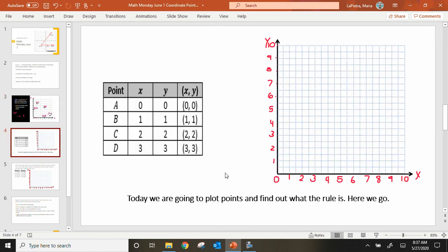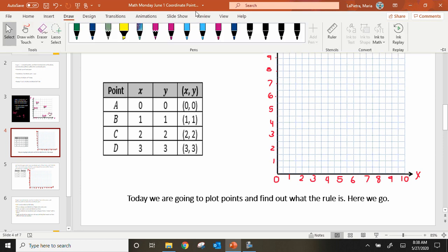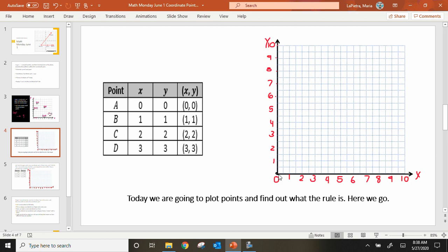Here we have some points. Let's plot these together and find out what the rule is. Let's plot point A. Our X is zero, and our Y is zero. That would take me nowhere. I didn't go to the right on the X, and I did not go up on the Y. That is going to be right here, right on what we call, and you should know this, the origin, (0, 0). I'm plotting my point. That's where we're going to label A.